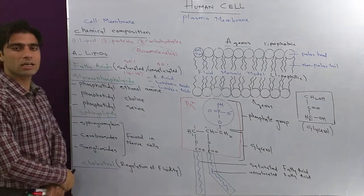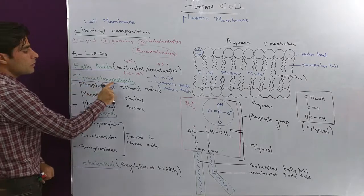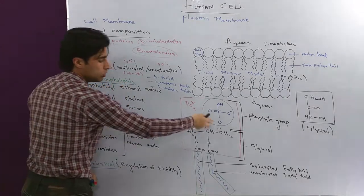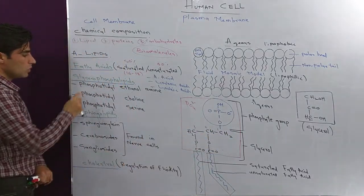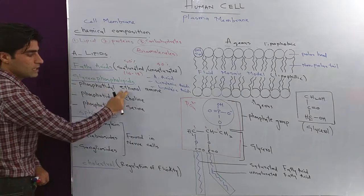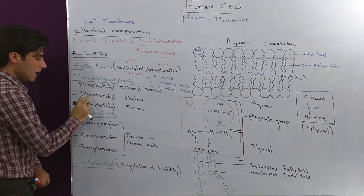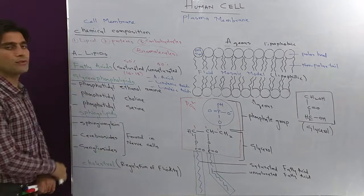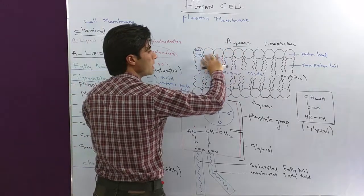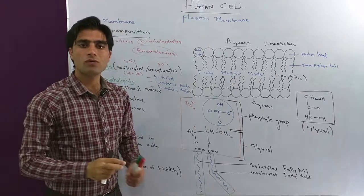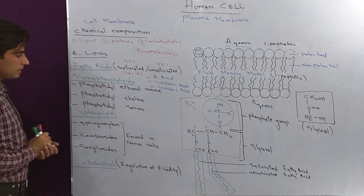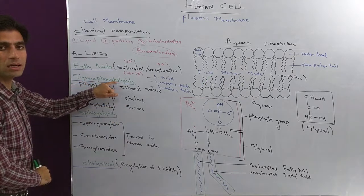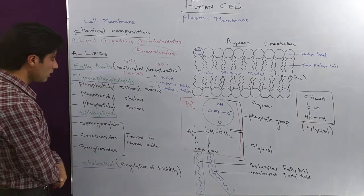Glycerophospholipids contain glycerol along with a phosphate group. Phospholipids are of different types, for example phosphatidyl ethanolamine, phosphatidyl choline, and phosphatidyl serine — these are collectively known as glycerophospholipids.